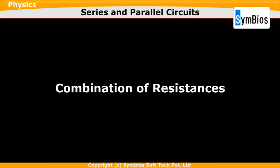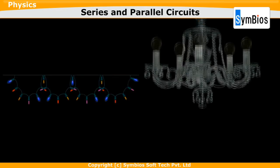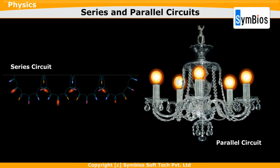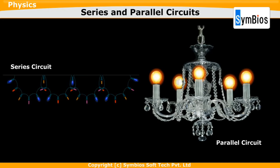Combination of resistances. In each of these circuits, the bulbs are the resistors. Now let us look at series and parallel circuits as combination of resistances. The chandelier that we saw earlier is a combination of resistances in parallel. The Christmas lights are a combination of resistances in series. Let us understand these in terms of current through and voltage across each of these resistances.